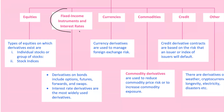Moving to fixed income and interest rate derivatives, these contracts are often based on bonds or interest rates and they're among the most widely used derivatives. An interest rate swap is a common type here, where two parties agree to swap interest payments on a specified amount over a period. For example, one might pay a fixed rate while the other pays a floating rate based on a market index like LIBOR. Swaps help companies manage their interest expenses based on their risk tolerance.